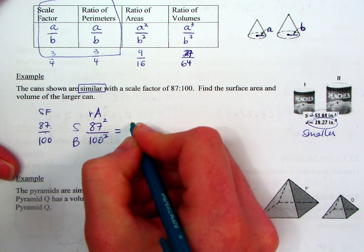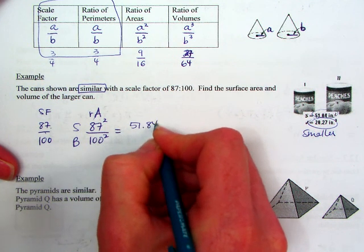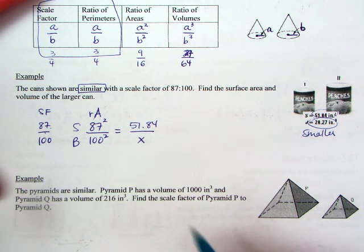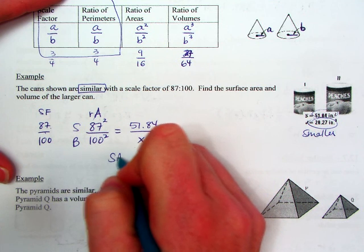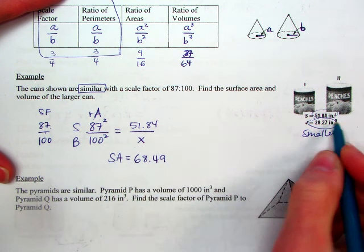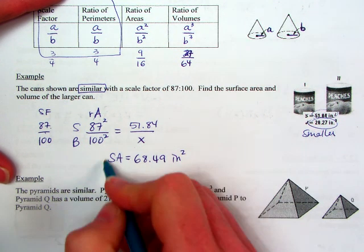So I'm going to put the 51.84 on top, and we'll put an X on the bottom. So doing a little cross-multiplying, I've got 100 squared times 51.84. And then we're going to divide by 87 squared. And I find out that the surface area of the larger shape is 68.49 inches squared. So that's the first one.